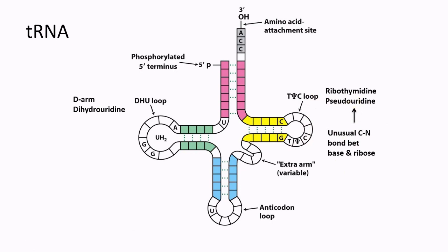Ribothymidine refers to the fact that thymine is normally not present in RNA, but in the case of tRNA we have a thymine present — this is known as ribothymidine. The D arm contains dihydrouridine. There is also a variable arm whose size differs across different tRNA types. This is the basic structure of the tRNA.